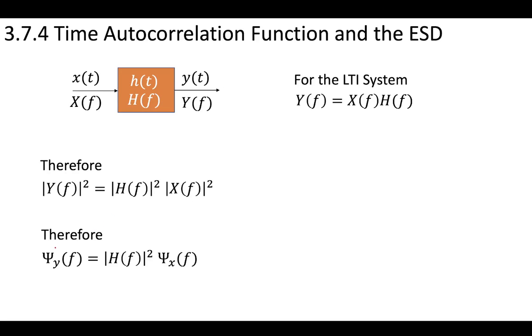Therefore, we can make a relationship that the energy spectral density at the output is equal to the energy spectral density of the input multiplied by the square of the transfer function.